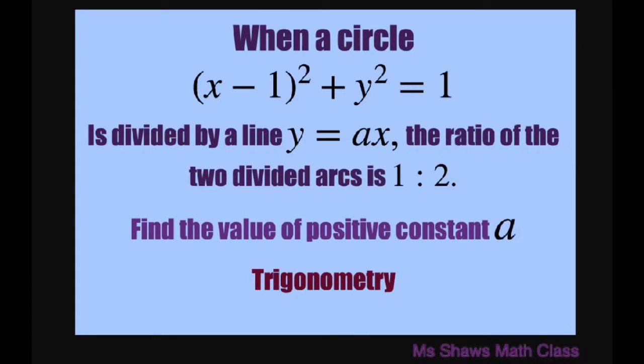Hi everyone. When a circle (x-1)² + y² = 1 is divided by a line y = ax, the ratio of the two divided arcs is 1 to 2. We're going to find the value of the positive constant a in this line, which is basically the slope.